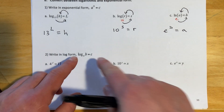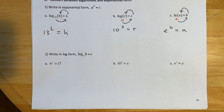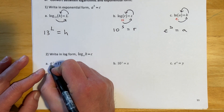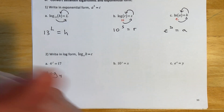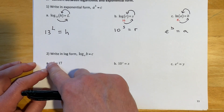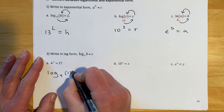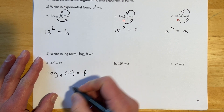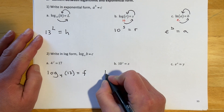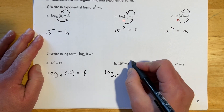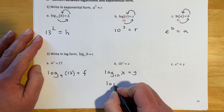Going the other direction — given exponential form, find the log: the base stays the same, so 4^f = 17 becomes log base 4 of 17 equals f. The exponent and the argument switch sides. For 10^y = x, I can write this as log base 10 of x equals y.